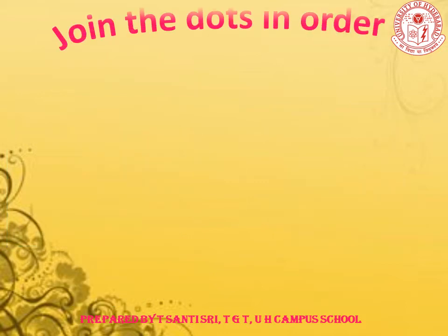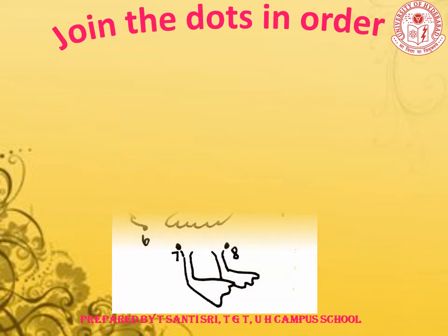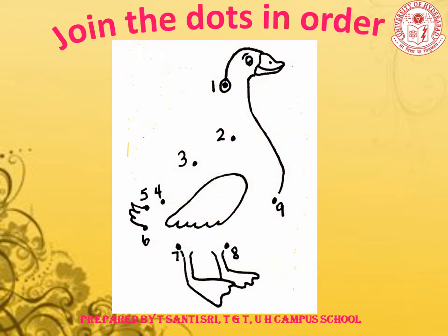Children, I already told you we have one interesting activity. A picture is given for us with some numbers — we need to join the dots in order. Let us start: from 1, then 1 to 2, 2 to 3, 3 to 4, 4 to 5, 5 to 6, 6 to 7, 7 to 8, and 8 to 9. What is the picture you got here? Yes, it is a beautiful duck!